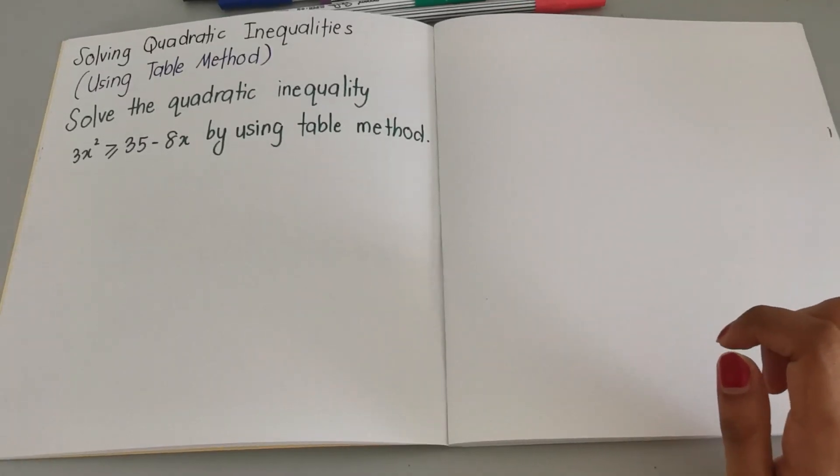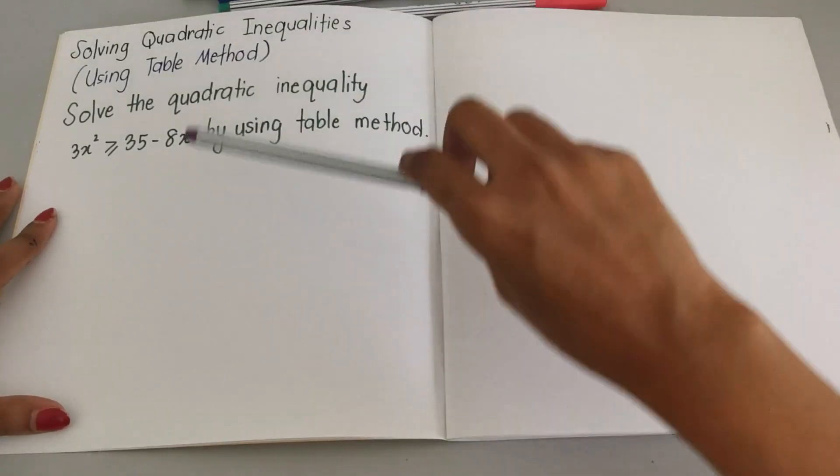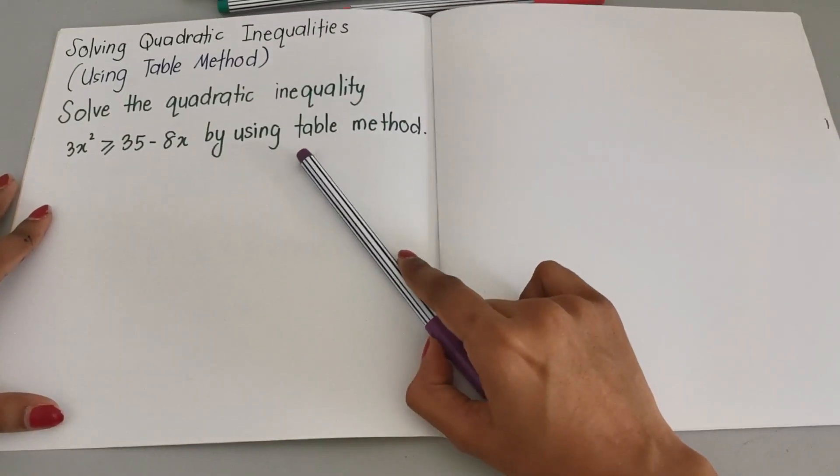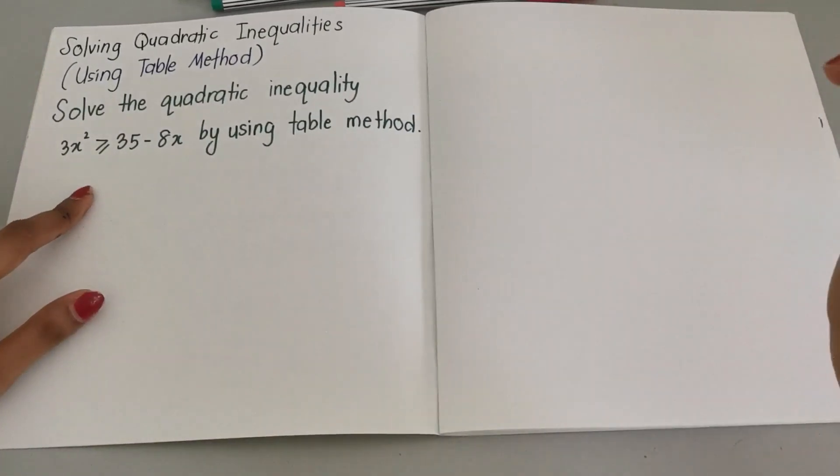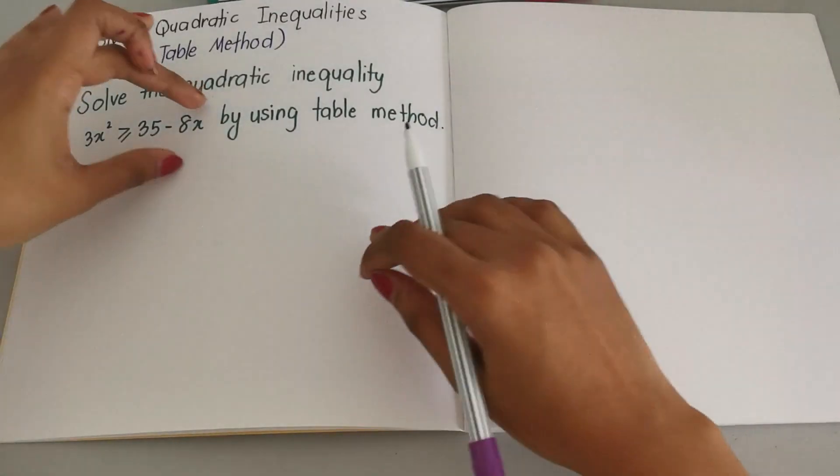Part 2 is solving using number line method and this is part 3. The question states that we should solve this quadratic inequality by using table method. The first step is to form all the equation on the left hand side.